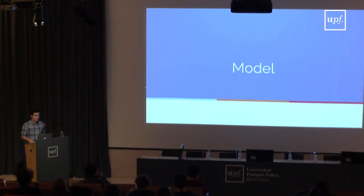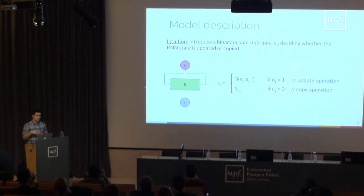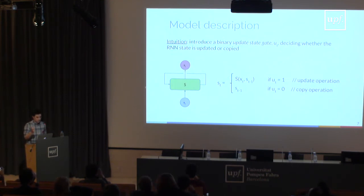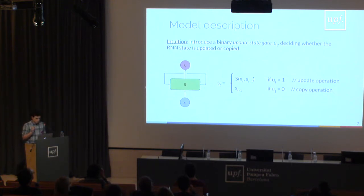That's the main goal of this work. We propose a new model called the Skip RNN. The idea is that we can wrap any RNN — this block can be a vanilla RNN, an LSTM, a GRU, whatever you like — and we add an additional update gate that's binary, zero or one. Whenever this is one we perform the regular update to the RNN; when this is zero we skip and simply copy the hidden state from the previous time step.